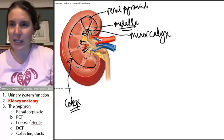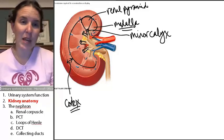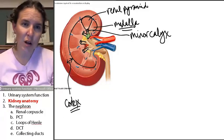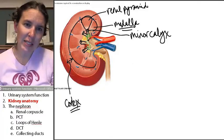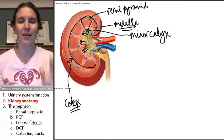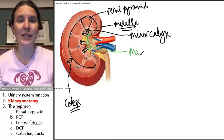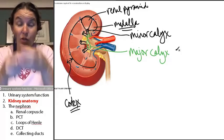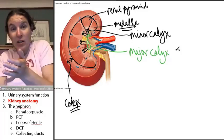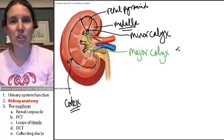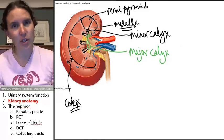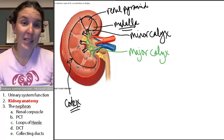Minor calyces — that's plural for calyx — minor calyces dump into, what would you call them? A couple of minor calyces dump into, of course, a major calyx. So a single renal pyramid dumps into a minor calyx, a couple of minor calyces dump into a major calyx, and the major calyces dump into the renal pelvis.